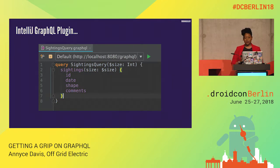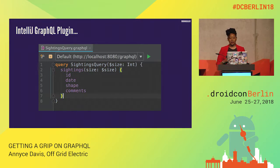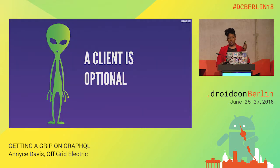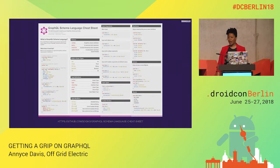A quick tip: use the IntelliJ GraphQL plugin. It provides syntax highlighting, a run button, and makes it much easier to interact with your server when working in Android Studio. Keep in mind that a client is totally optional — GraphQL is still regular HTTP requests, so you can bypass it if needed. If you're on the fence, there are public GraphQL APIs you can play with. There's also a schema language cheat sheet available for when you're not sure how to structure your information.